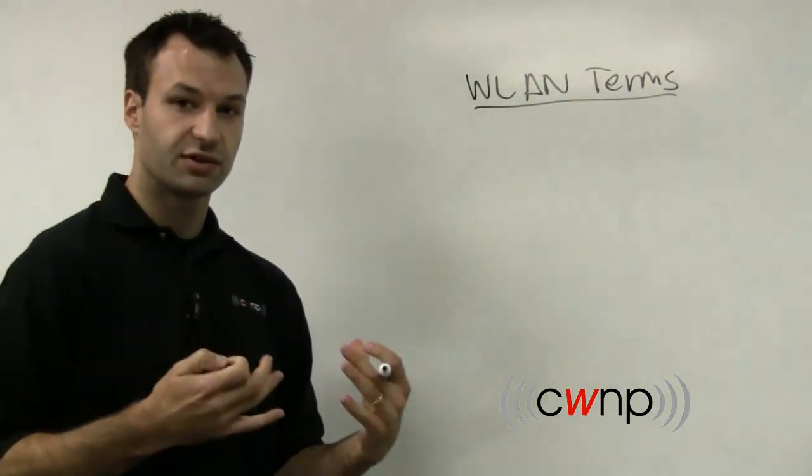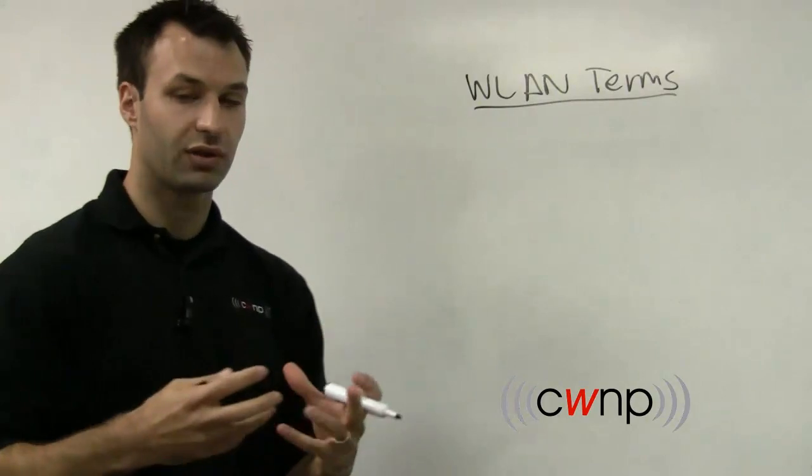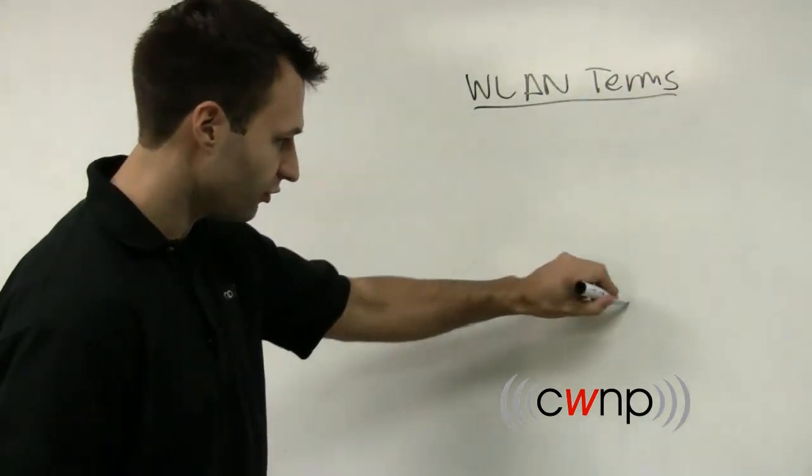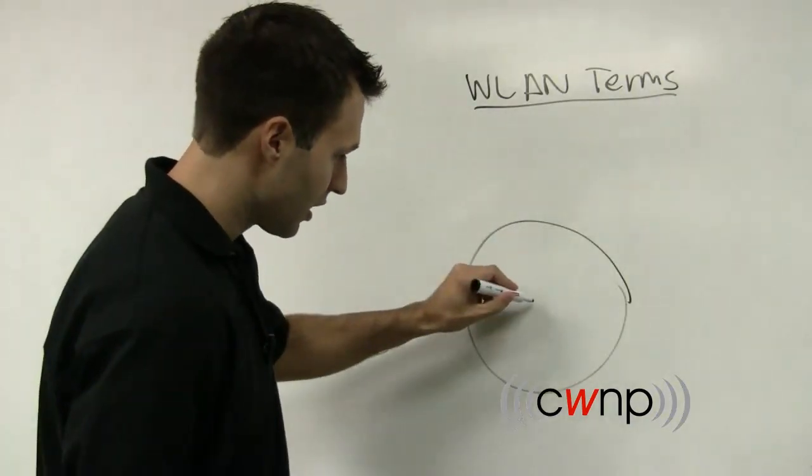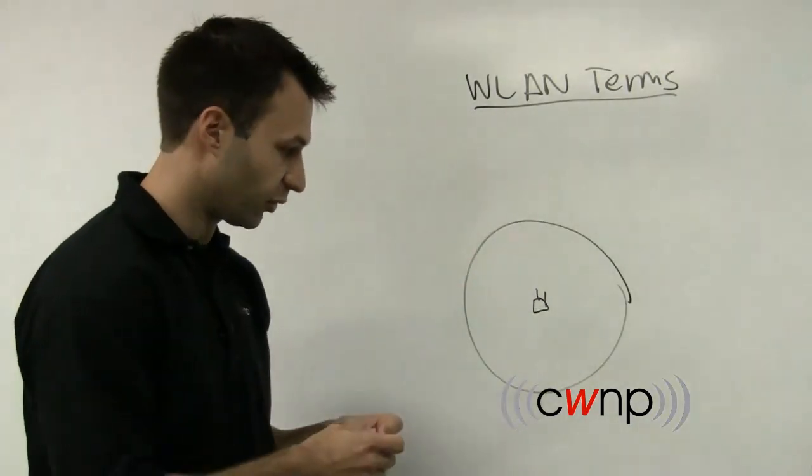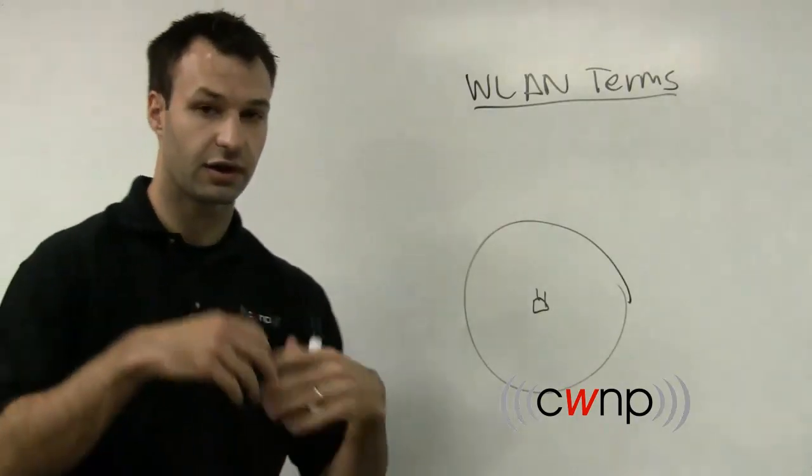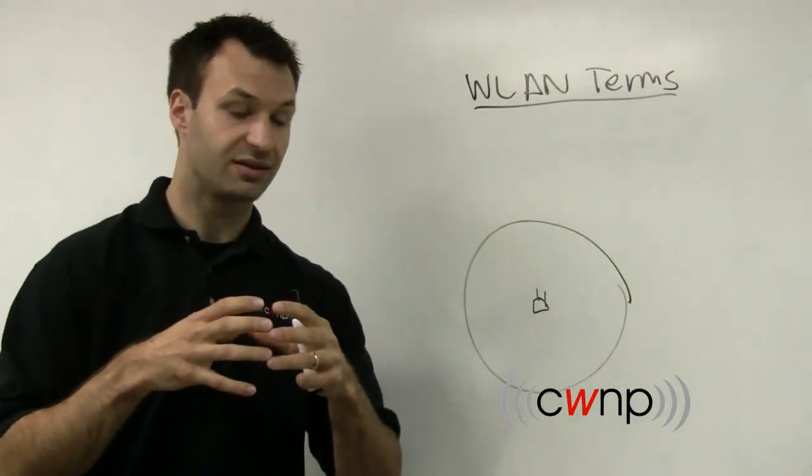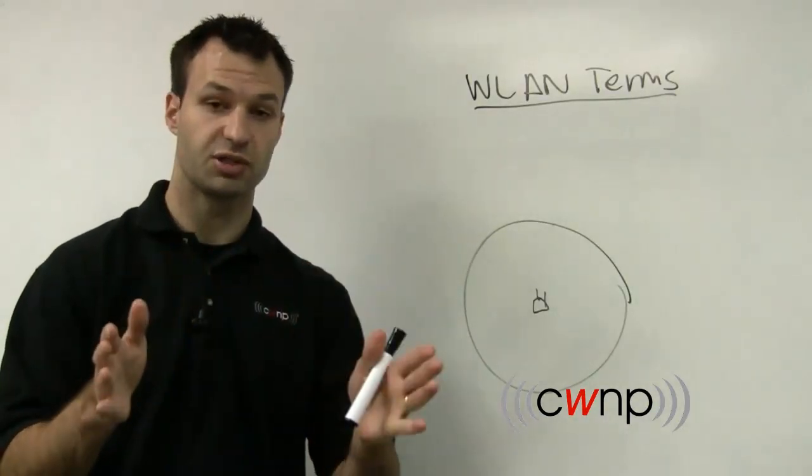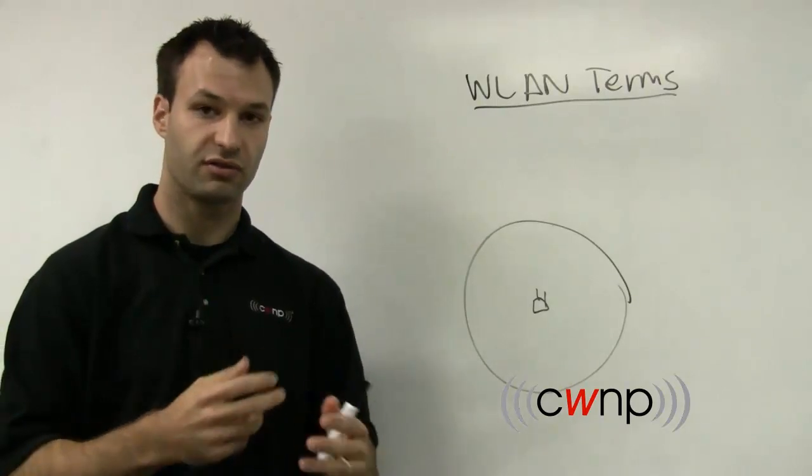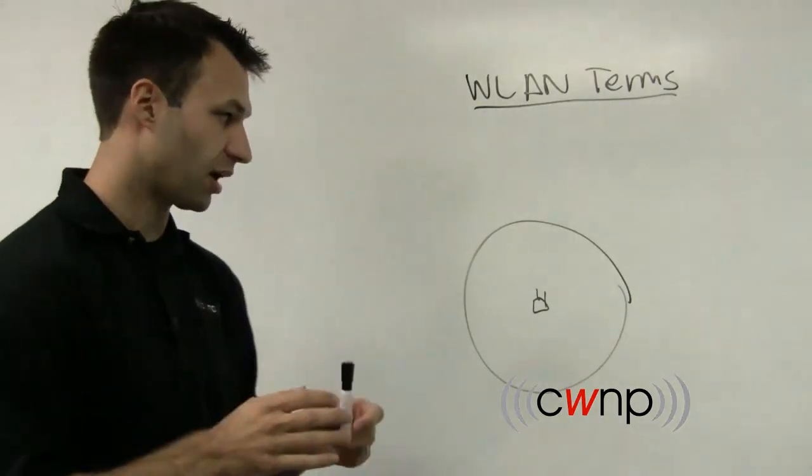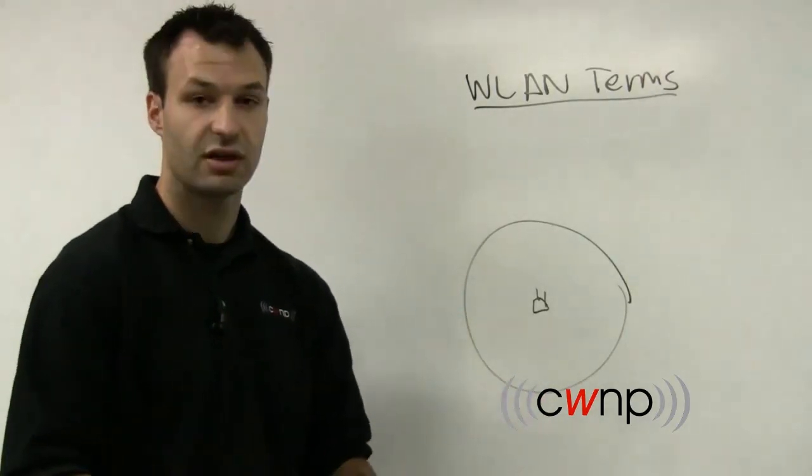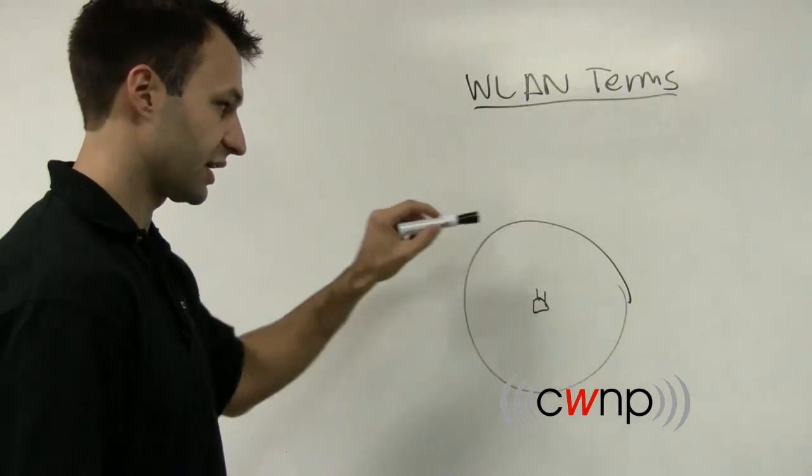We're going to talk about five different terms that are basically all related to the services provided by a wireless LAN. So let's start by talking about a service area. Let's draw an access point in the middle of a service area. You're going to mount this access point to the ceiling, and based on that access point's antenna gain and transmission pattern, transmit output power, all of these things that are related to RF propagation, this antenna is going to service a certain area of physical space.